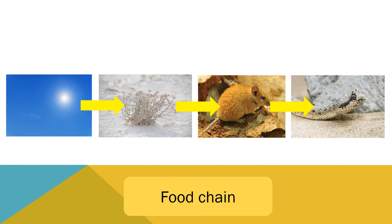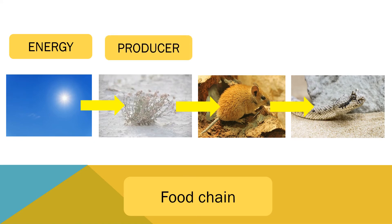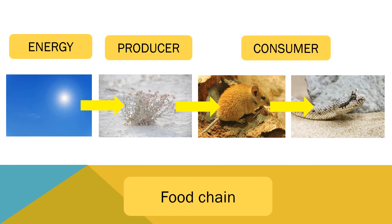In this food chain, the sun provides the energy for the grass to grow. The grass can produce its own food. The mouse eats the grass and the snake eats the mouse. The mouse and the snake are both consumers.